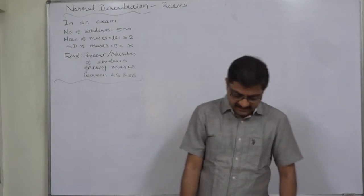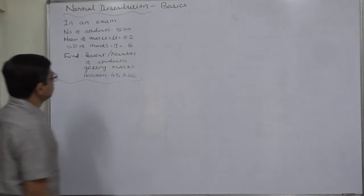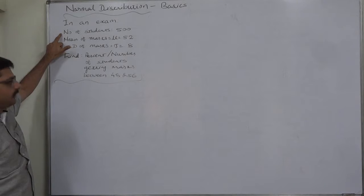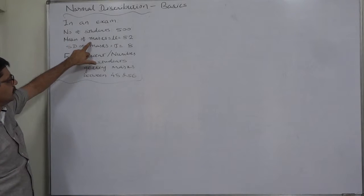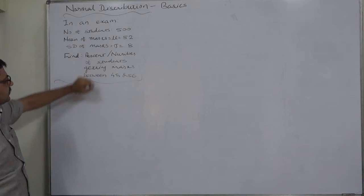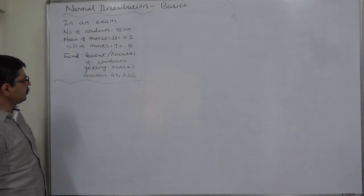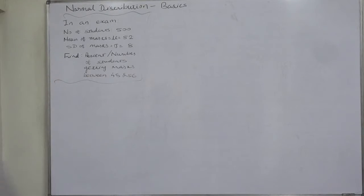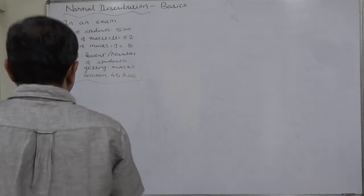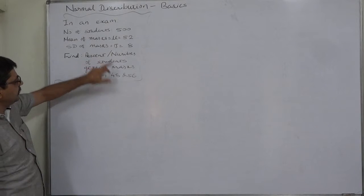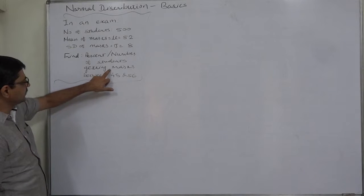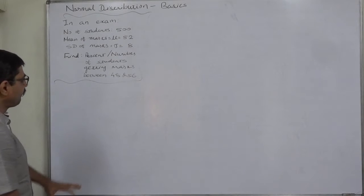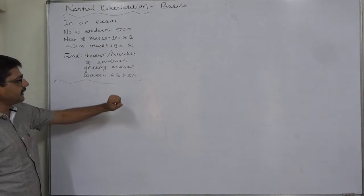Hello and welcome. The next case in basics of normal distribution: in an examination, the total number of students is 500, mean of marks is 52, standard deviation of marks is 8. Find the percentage and number of students getting marks between 48 and 56. To find this, we first need to find the probability of marks between 48 and 56.